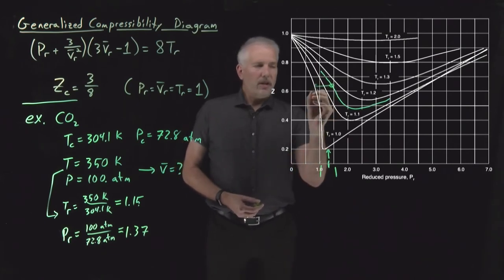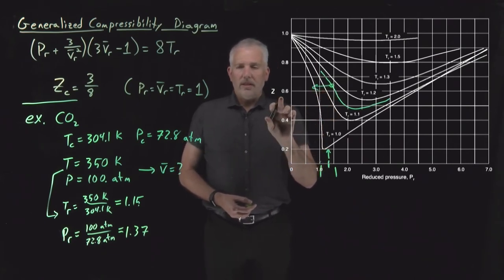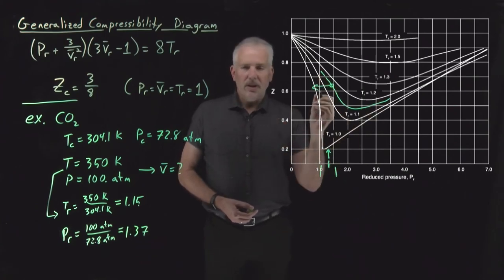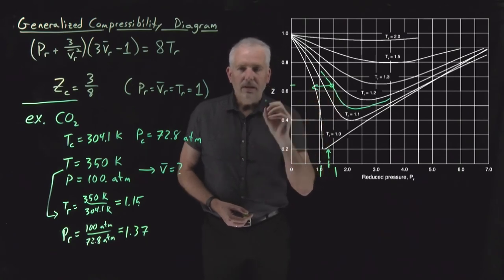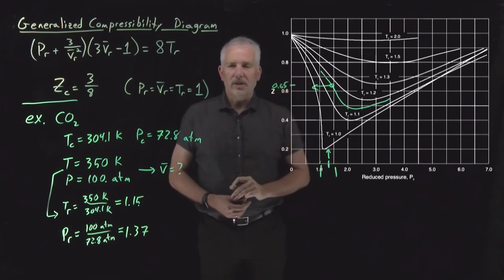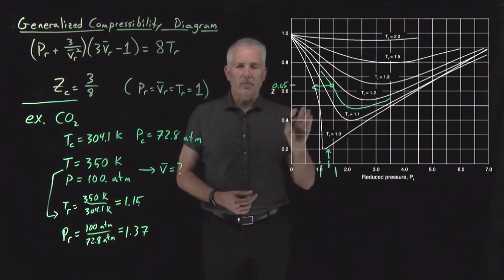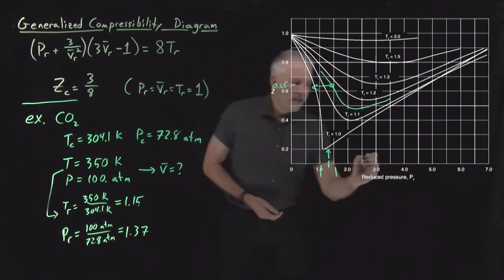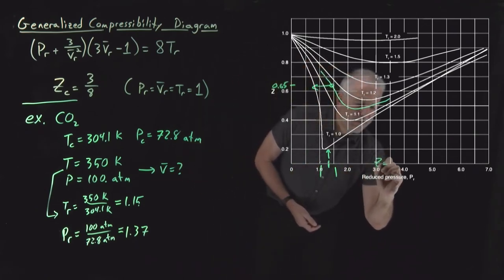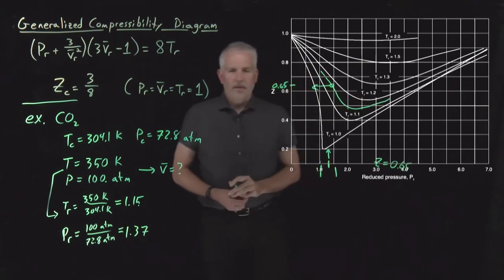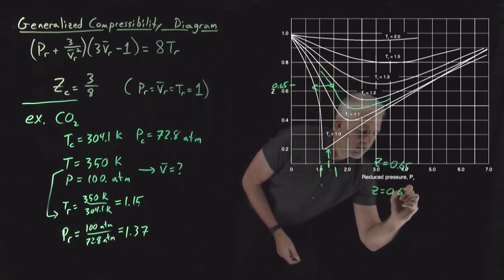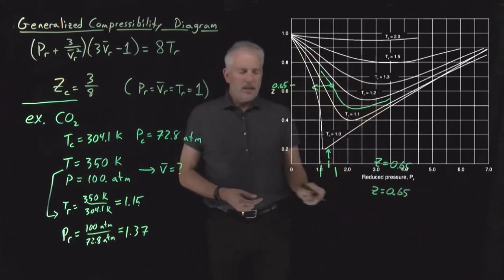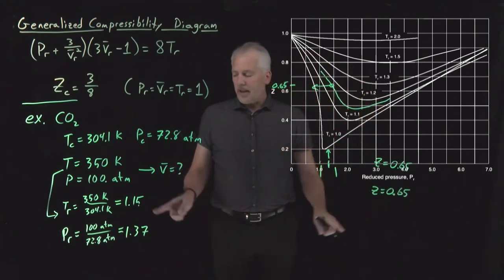So I just need to read up from this point and find the location on this 1.15 isotherm, roughly right about there. And then read off on the volume axis, what is the compressibility factor for a gas at this temperature and at this pressure. And if I try to do that fairly carefully, it looks like that's going to be fairly close to 0.65 or so, at least to my ability to read off of this diagram. So we predict that the compressibility factor is equal to 0.65 under these conditions.